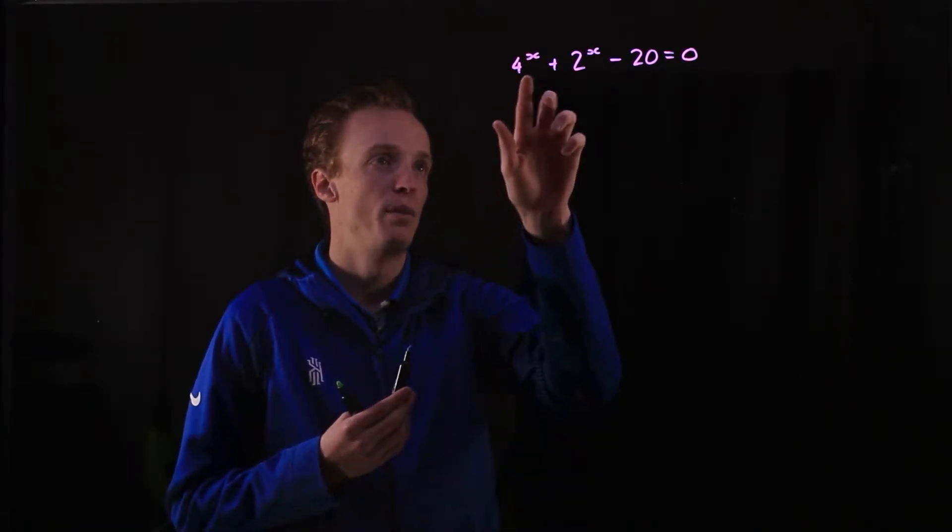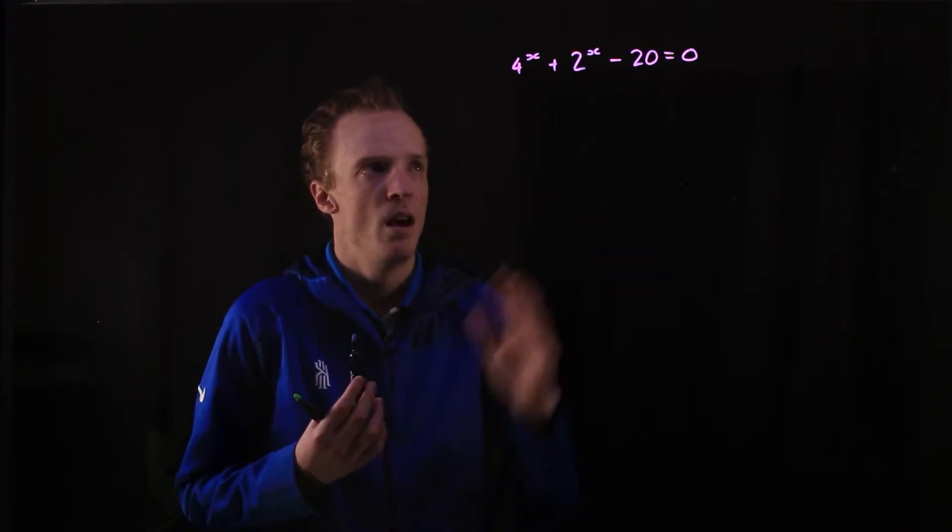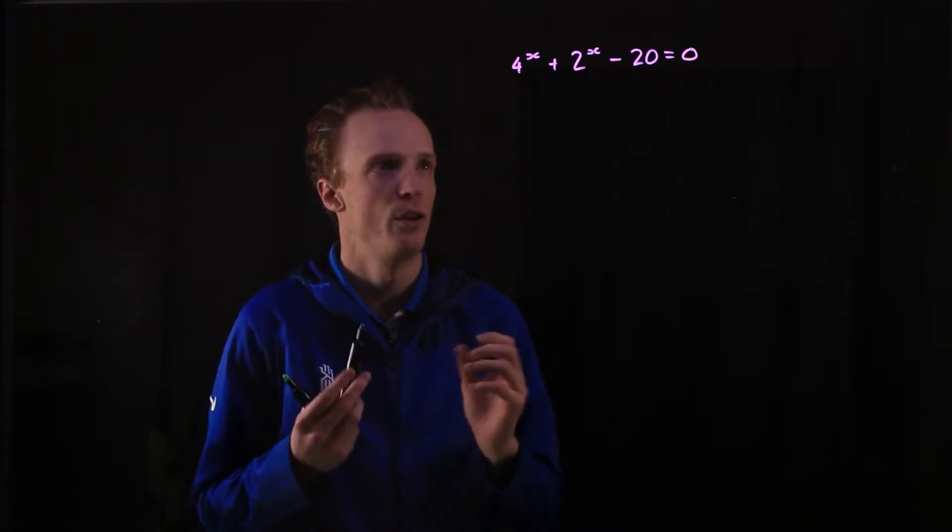For example, if I've got this 4^x + 2^x - 20 = 0, I can first factorise this into two brackets and then use the null factor law to solve it.